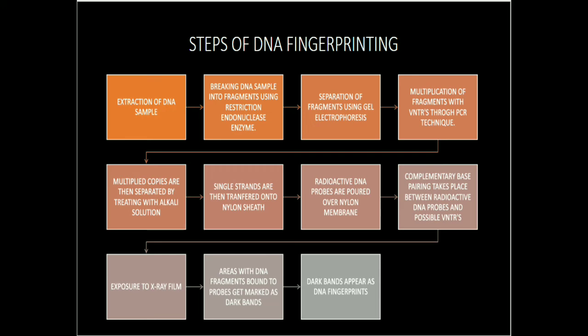We select VNTRs of suitable size and amplify them using PCR — polymerase chain reaction — because the sample quantity is very small and we need more. The double-stranded VNTRs are then treated with alkaline chemicals, which splits them into single-stranded DNA fragments.